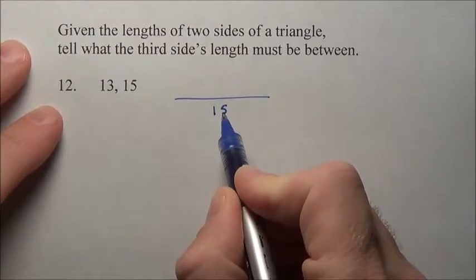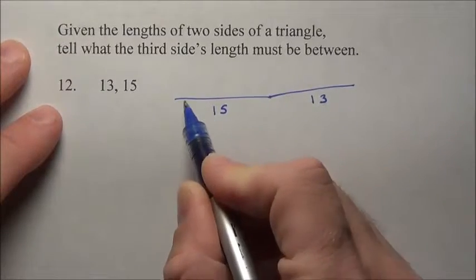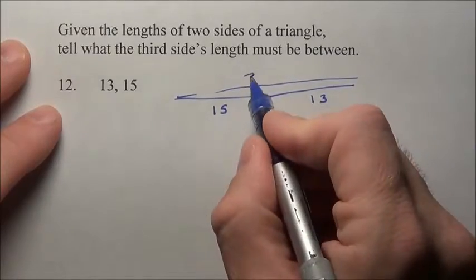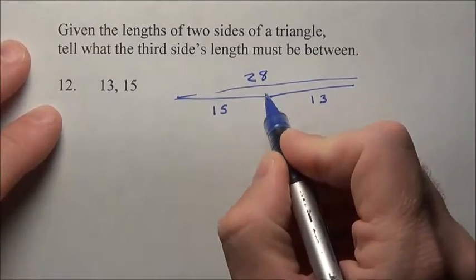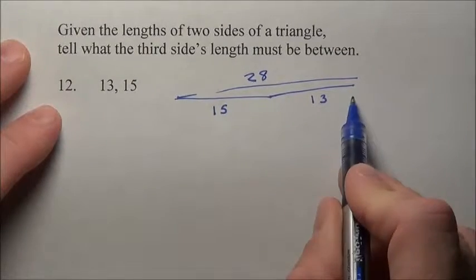If one side is 15 and the other is 13, and I stretch them almost out perfectly flat, you can see that the final third side would be 15 plus 13, about 28. It's got to be a little less than 28 because that would be if it were perfectly flat.